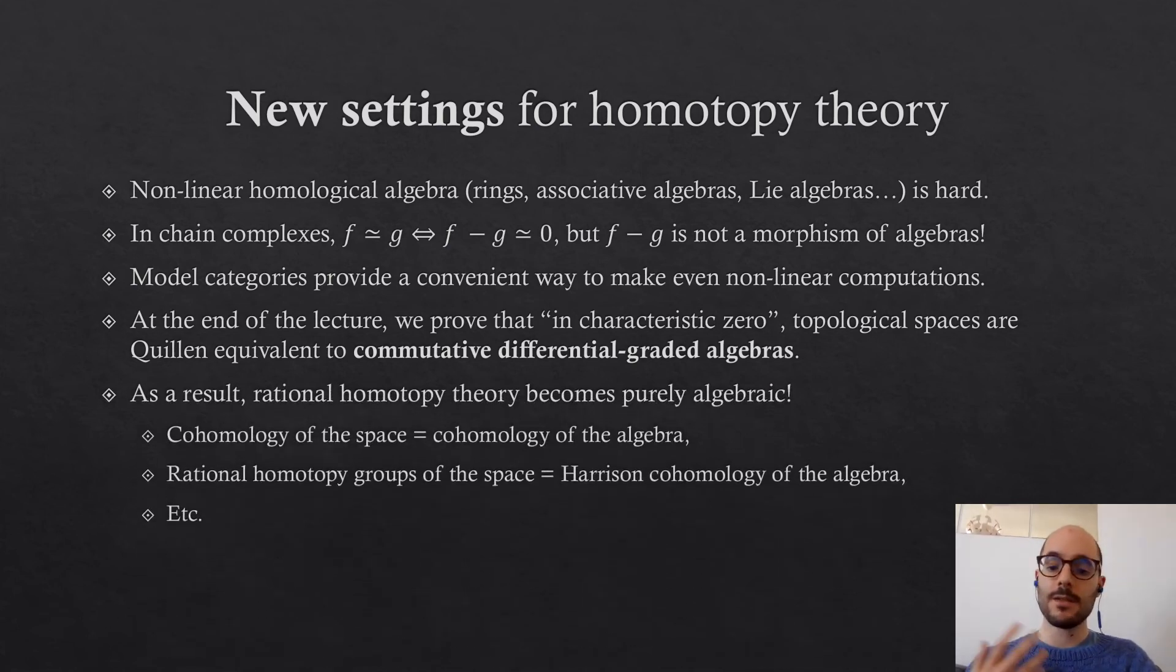As a result, rational homotopy theory becomes purely algebraic. The homology of the space would be the homology of the algebra, the rational homotopy groups will be the Harrison homology of the algebra, and so on. You can make all the computations you want about your spaces just from the commutative differential graded algebra.